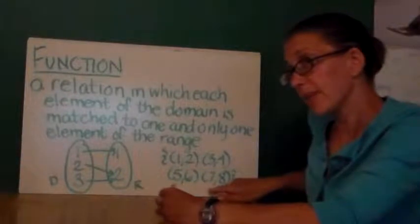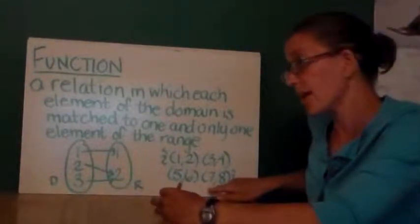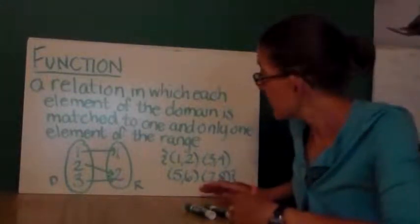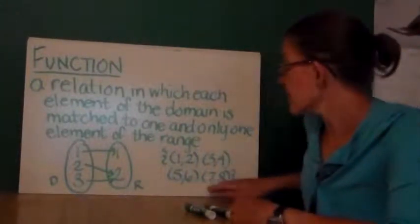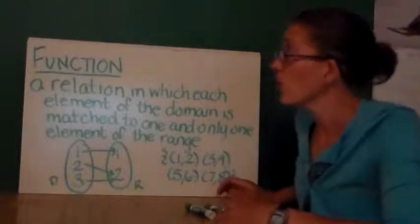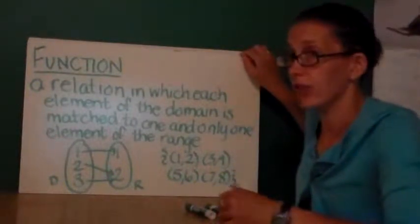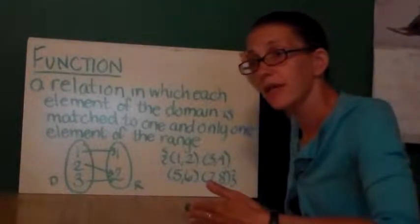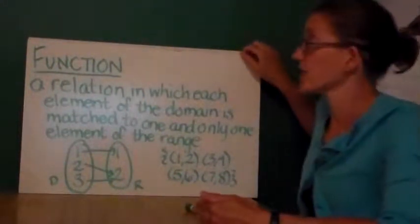Now, I've repeated my sets of ordered pairs from my first problem, definition of relation, because it turns out that first sample was also a function. So, some relations are functions, and all functions are relations.